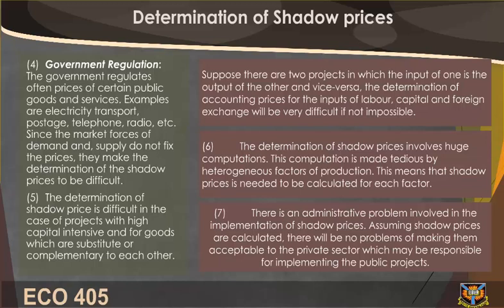Fourth, government regulation: the government often regulates prices of certain public goods and services — examples are electricity, transport, postage, telephone, radio, and so on. Since the market forces of demand and supply do not fix these prices, they make the determination of shadow price difficult.